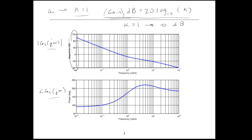A couple more things about the Bode plot. Notice that the x-axis — the frequency axis — is in log scale, going from 0.1 to 1 to 10 radians per second. Notice also that in the magnitude plot we have very pronounced slopes at low frequency and high frequency. Similarly, in the phase plot there are pronounced slopes, with the phase being 0 at low and high frequencies. These behaviors won't always be true in every Bode plot, but they tell us quite a bit about what the loop transfer function is.